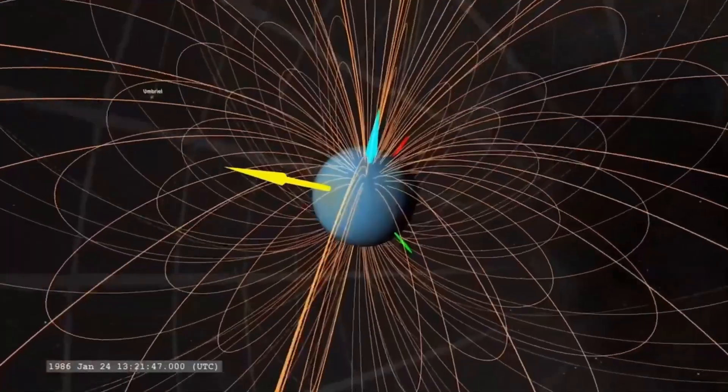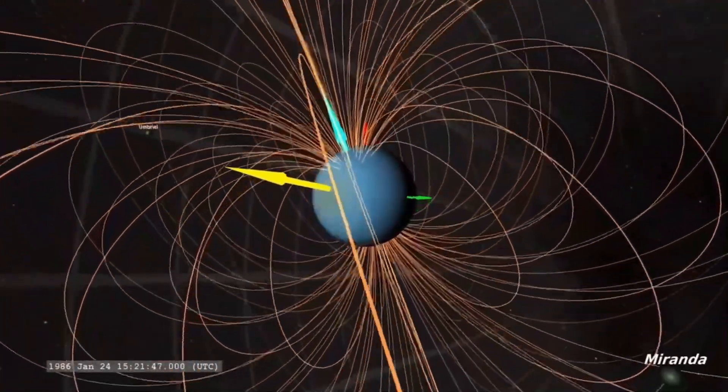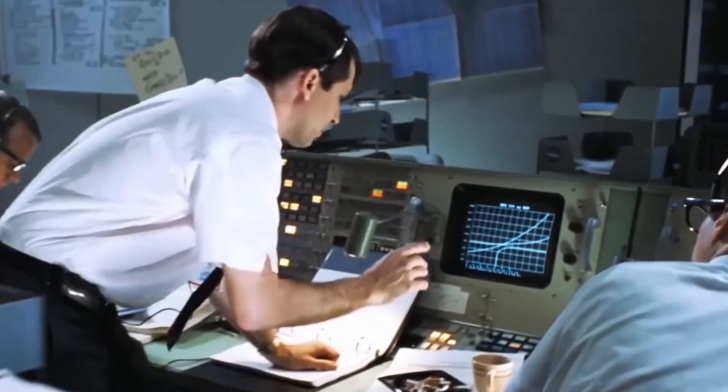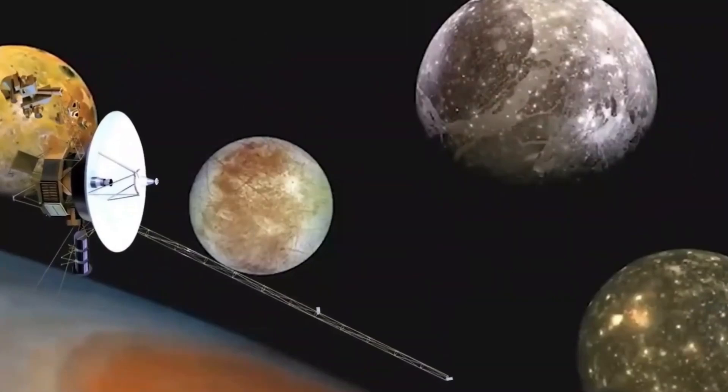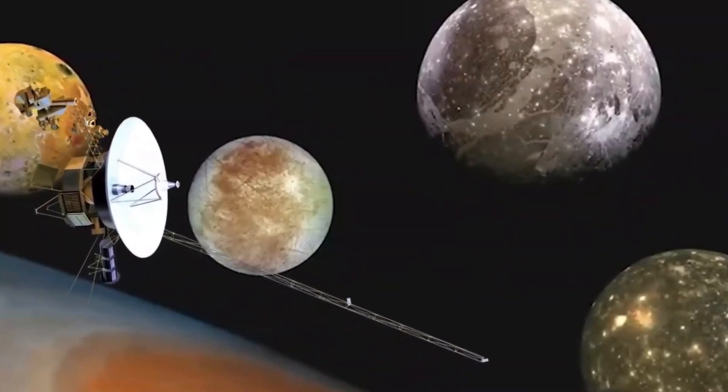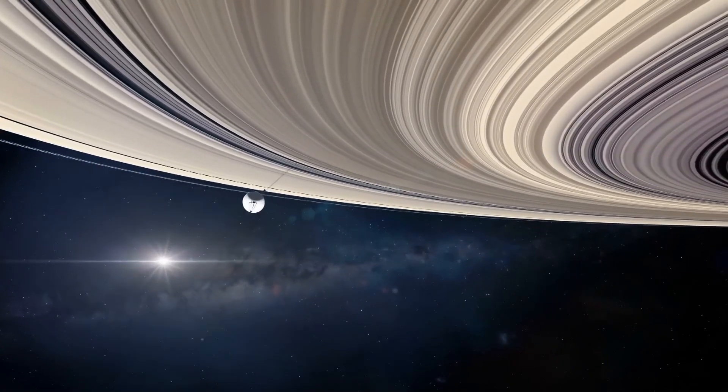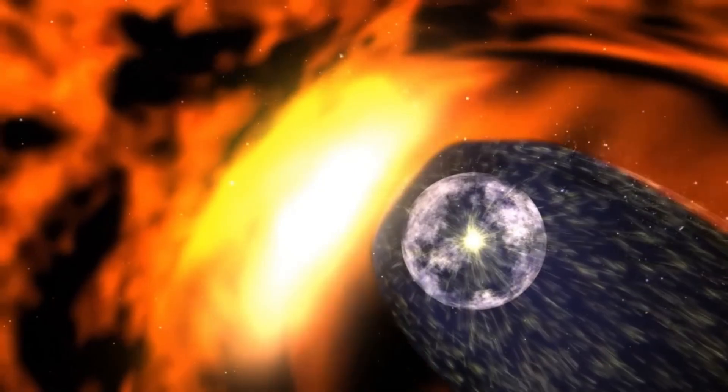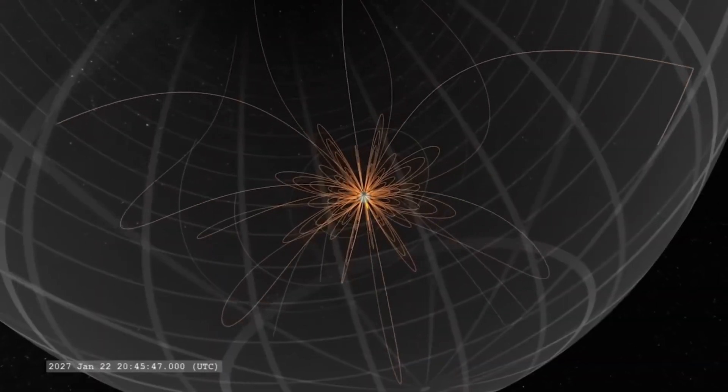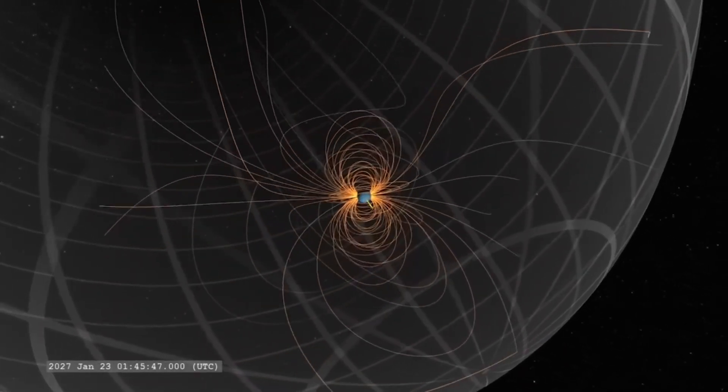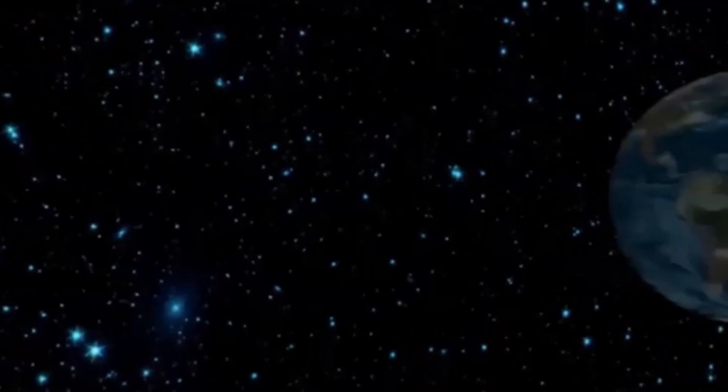Stars, akin to celestial forges, serve as crucibles for the synthesis of elements, beginning with the fusion of hydrogen into helium in their cores. The most massive stars, up to seven to eight times the mass of our Sun, possess the capacity to forge elements up to iron through successive stages of nuclear fusion. However, once the stellar core is saturated with iron, fusion ceases, leading to a catastrophic collapse under the force of gravity. This collapse triggers a supernova explosion, expelling the outer layers of the star into space and leaving behind a dense core, a neutron star.